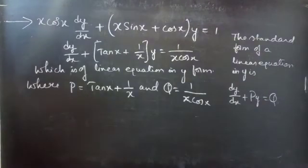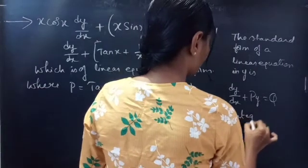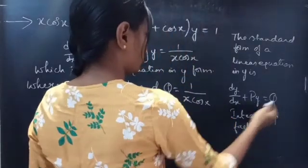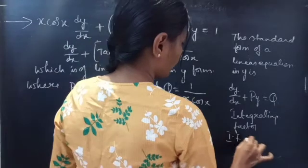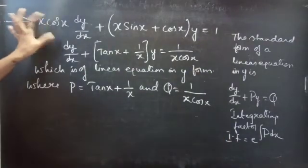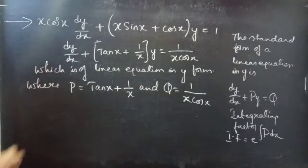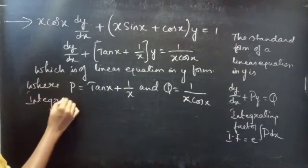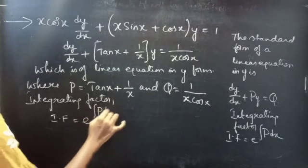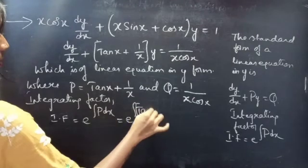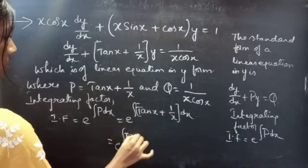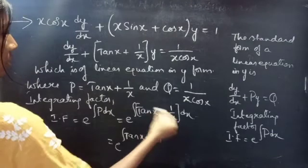Now we need to find the integrating factor. We know that the integrating factor of the linear form is given by IF = e^(∫P dx). Using this formula, the integrating factor equals e^(∫(tan(x) + 1/x) dx), which we can write as e^(∫tan(x) dx + ∫(1/x) dx).